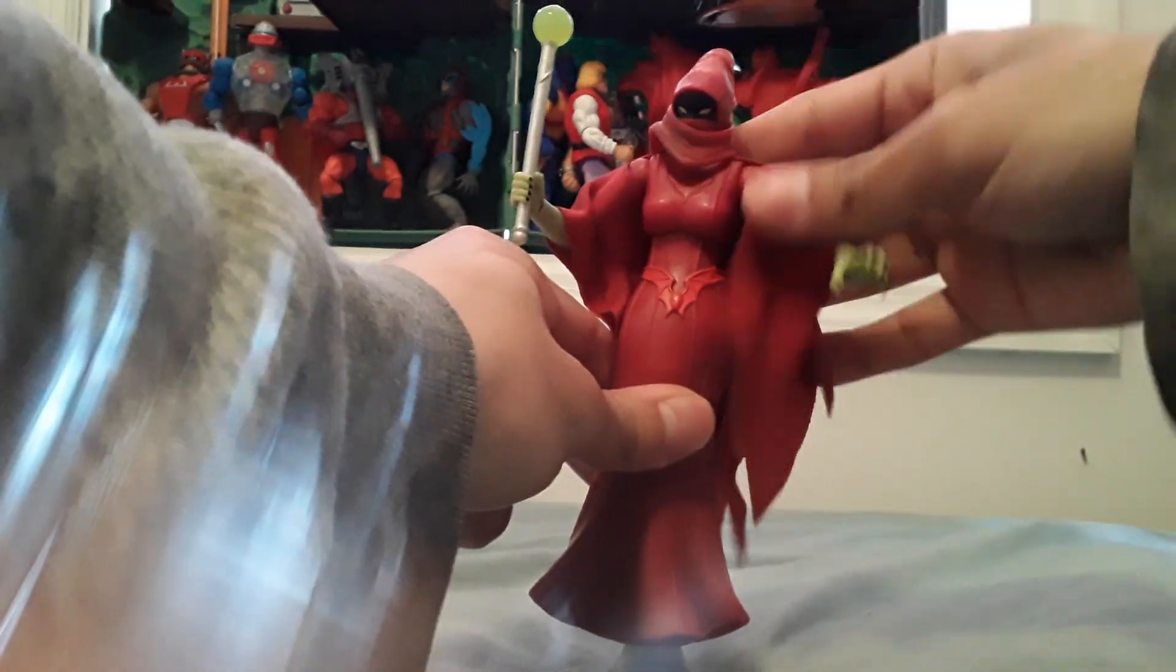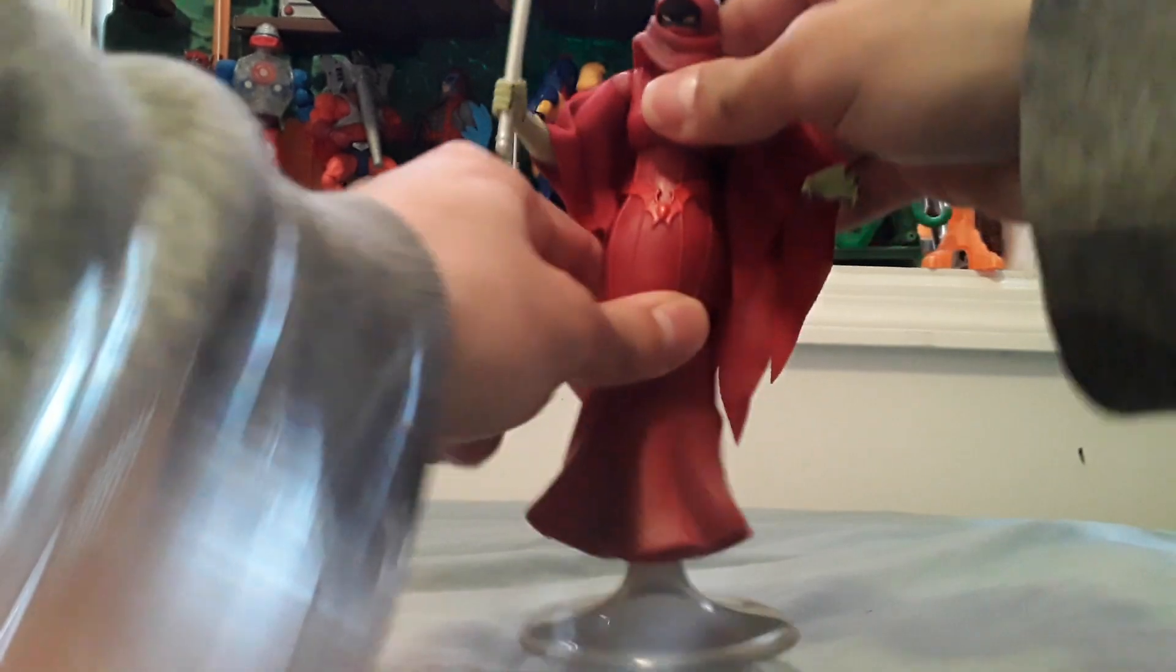There's a chest, upper body articulation, but there's no ab crunch because of the way her dress is.